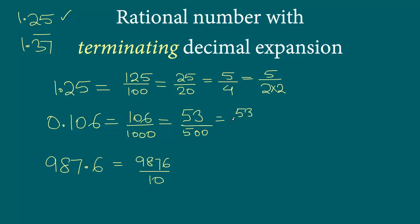For the denominator we can write the prime factors: 500 is 5 times 100, and 100 is 25 times 4. We can write this as 53 over 5 times 2 squared times 5 squared—4 is 2 squared, 25 is 5 squared, so together that's 5 cubed.